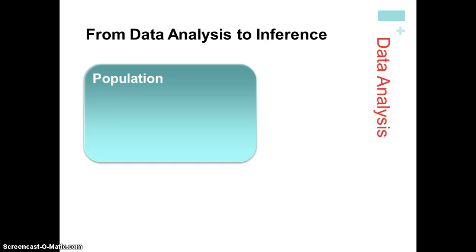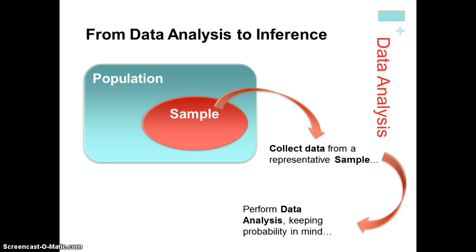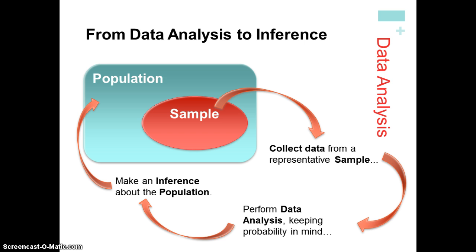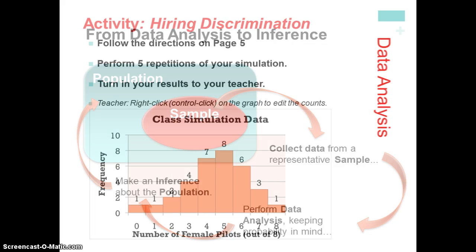From data analysis to inference: with inference, we're taking information from a sample and using that to infer information about a population. For example, if I wanted to know which candidate would probably win an election, I would stand outside a polling center and sample a certain number of voters. I could never ask every single voter, so I take a sample, poll them, and infer that the result of my sample is going to match what the overall population will demonstrate.